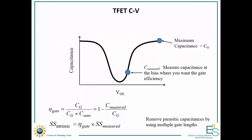To illustrate this in detail: bias your transistor to the desired operating point and measure the capacitance in the CV curve. Your maximum capacitance will ideally be on the order of the gate capacitance, though care is needed with gate leakage. Using the measured capacitance and gate capacitance, you can compute the gate efficiency and get something closer to the intrinsic swing. When doing this measurement, make sure you're measuring the actual device capacitance and not parasitic capacitances — you can address that using a multi-gate length CV measurement.